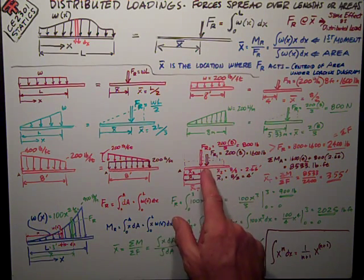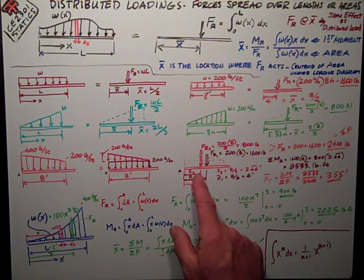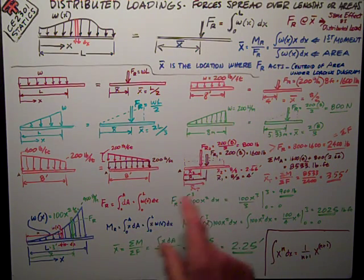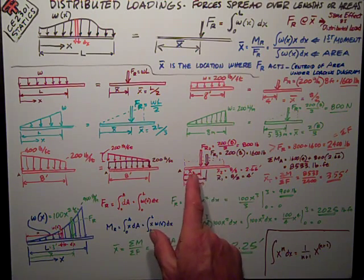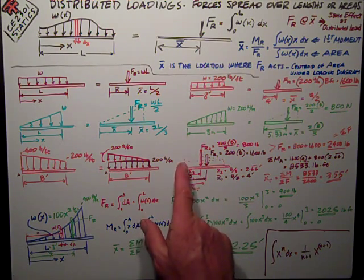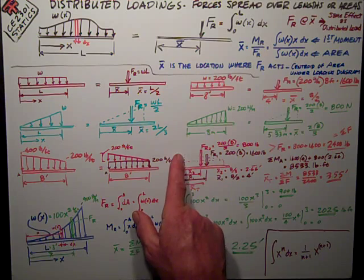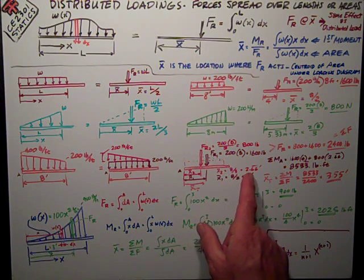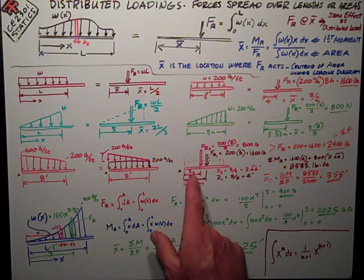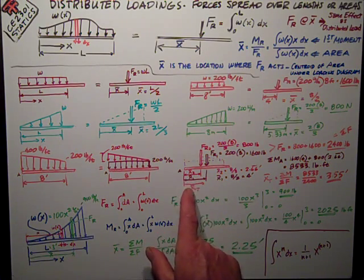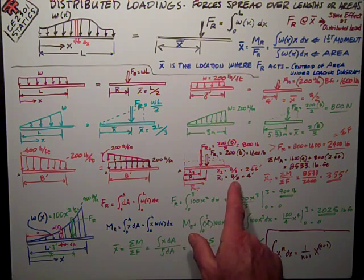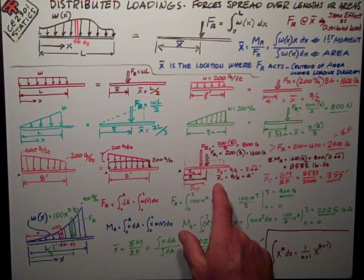I can figure out each individual piece's centroid. Centroid of part 2, FR2, is at one-third of the distance from the base, or the big end, which is 8 feet, 8 divided by 3 is 2.66 feet, that's x bar 2. The rectangle is right in the center at 8 over 2, 4 feet, that's x bar 1.